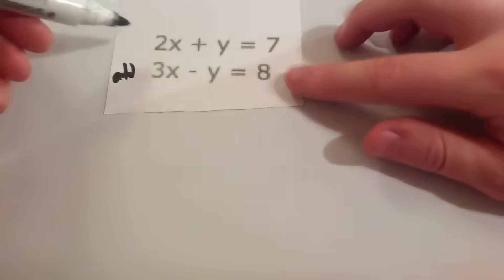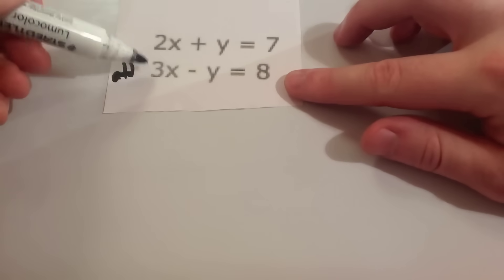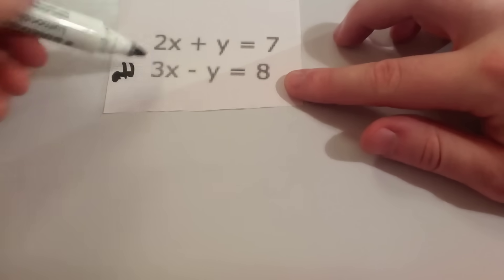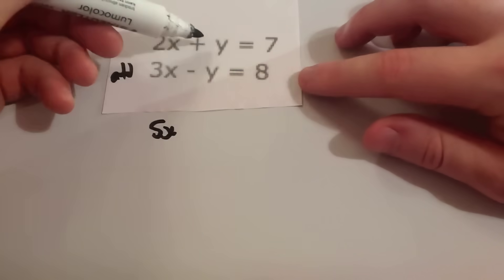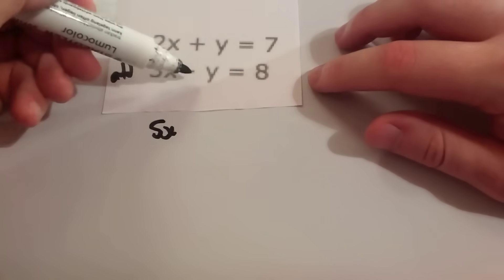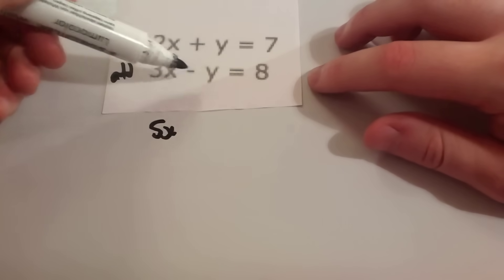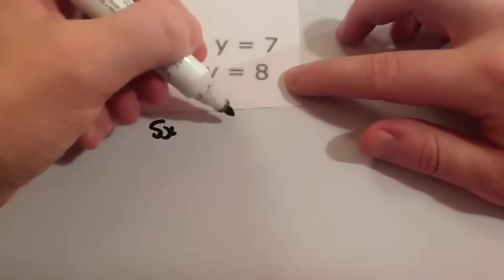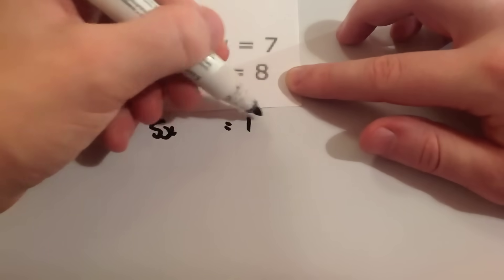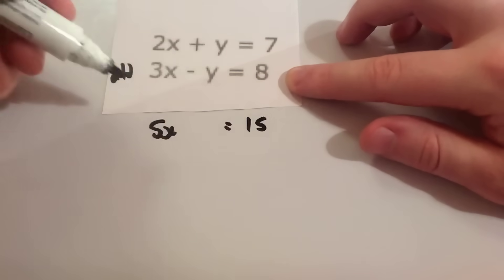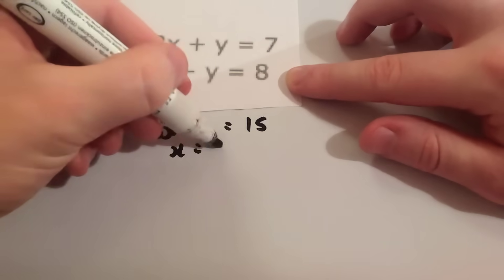So we add. 2x plus 3x is 5x. y plus minus y gives zero. And 7 plus 8 equals 15. So we divide by 5 and get x equals 3.